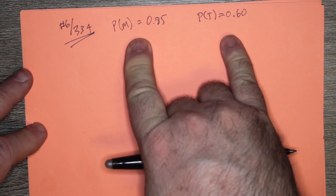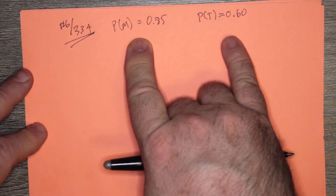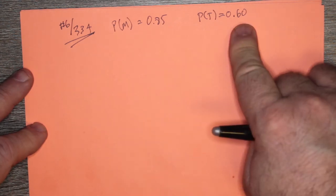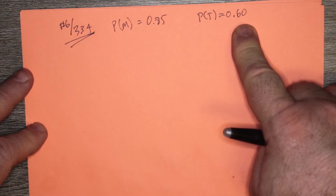That Michaela, on her own, will say yes 0.85% of the time, or 85% of the time. And Tenzin will ask someone out 60% of the time, given that that's what he wants to do.